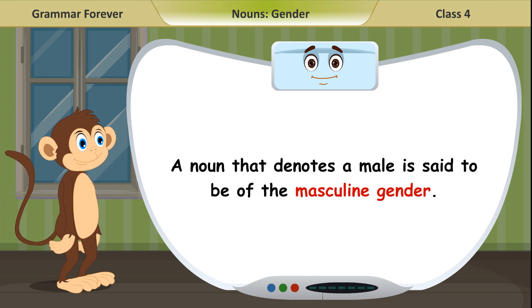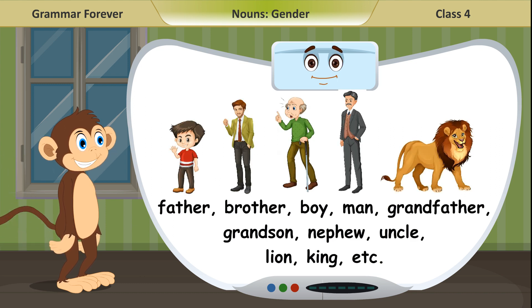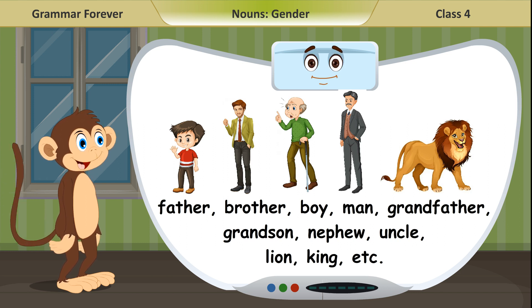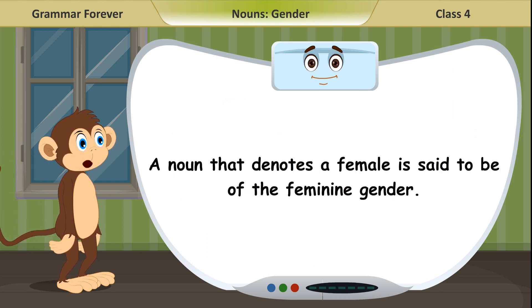A noun that denotes a male is said to be of the masculine gender. A noun that denotes a female is said to be of the feminine gender.